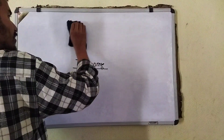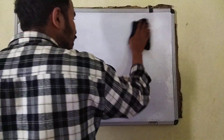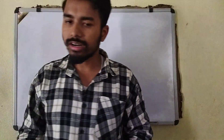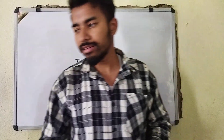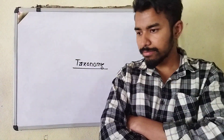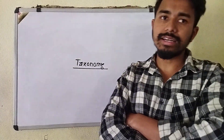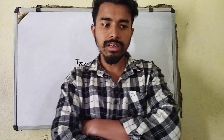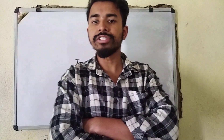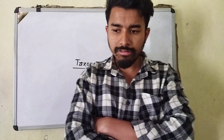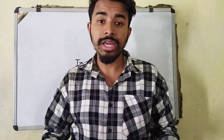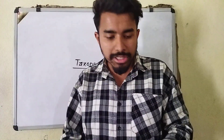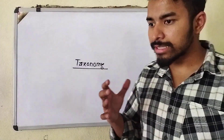We will begin from taxonomy. Taxonomy is the branch of science that deals with classification, nomenclature, and identification of living beings from different regions. We give them some kind of name — a scientific name — and then we divide them into categories: some plant, some animal, some microorganisms, etc. And that is known as taxonomy.